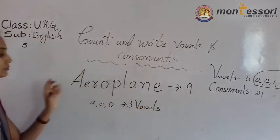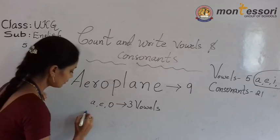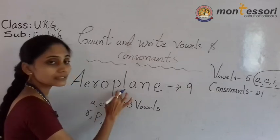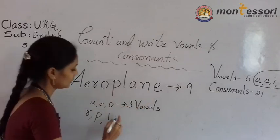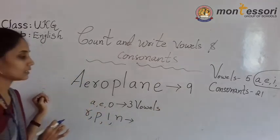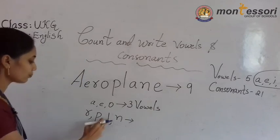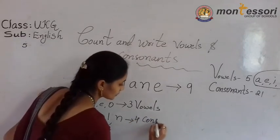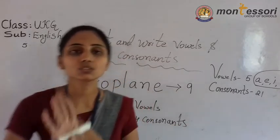Next. After A, E, O — next: R, O, O. Next: P. Next: L. Next: A, O — vowel. N. Next: E — vowel, already counted under vowels. So how many consonants are there? One, two, three, four. How many consonants are there? Four consonants.